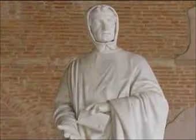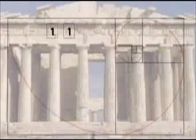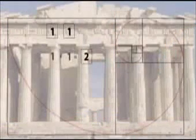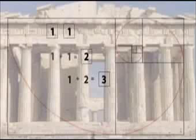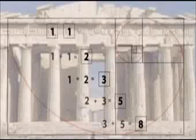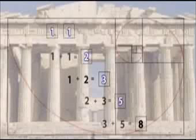But there could be an even more intimate connection to nature. In the 13th century, a mathematician named Leonardo Fibonacci discovered an important number sequence. It's a very simple sequence of numbers, starting with the number one twice. Each succeeding number in the sequence is the sum of the two preceding ones, so the sequence goes one, one, two, three, five, and so on.